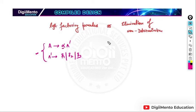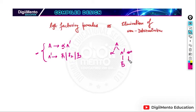Basically what we have done here is we have postponed the decision-making till the next part. In this way we can eliminate non-determinism or do left factoring — both are the same thing. Now we will take a few examples to see how we can do that.